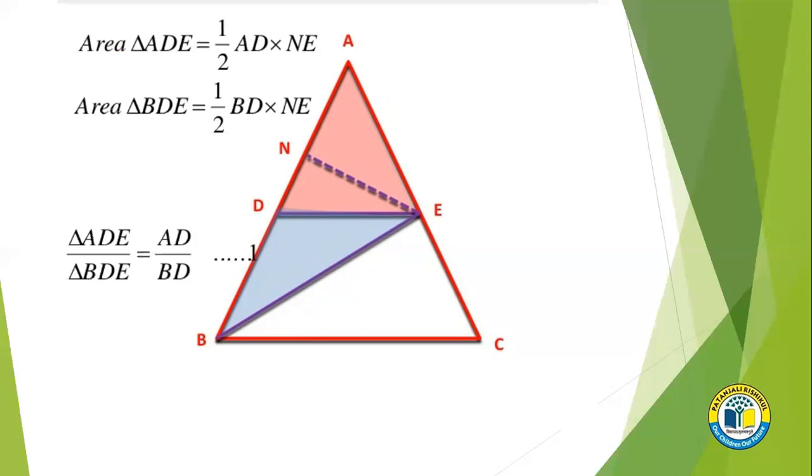Now the ratio of their areas will be AD upon BD, as half and half will cancel out, and NE and NE will cancel. So let this be equation 1: AD upon BD.